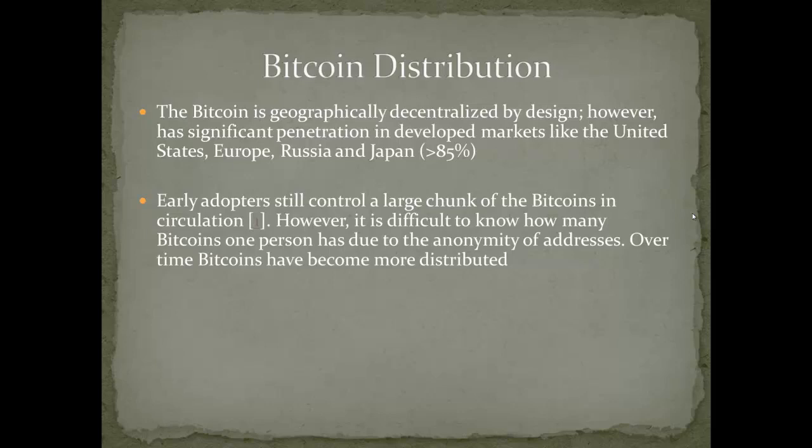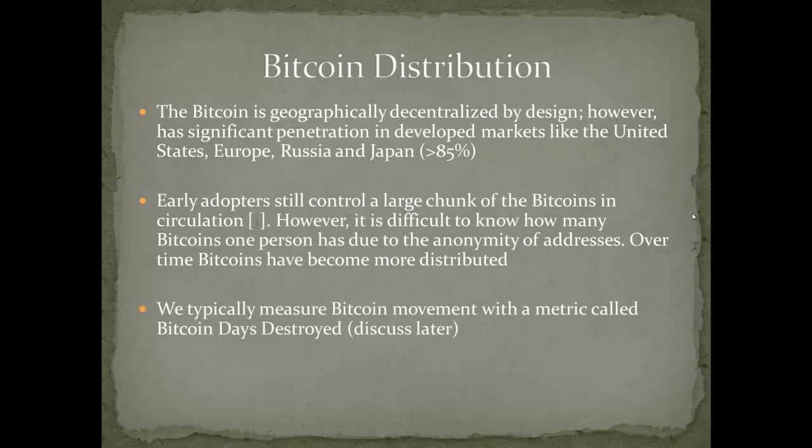Over time, the Bitcoins have become more distributed, particularly after the price hit $100 per Bitcoin, when we started seeing more people entering the market for the first time. We saw some of the older accounts that had not moved their holdings for quite some time actually liquidating for the first time ever. This is very common with any asset - like startups where early founders eventually sell off their holdings. After 10 to 25 years, the largest shareholders tend to be mutual funds and institutions, not the founders. We typically measure Bitcoin movement with a metric called Bitcoin Days Destroyed, which I'll reserve for a bit later in the lecture.